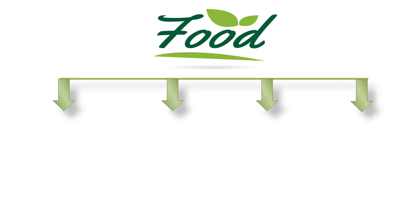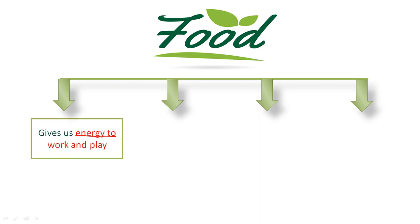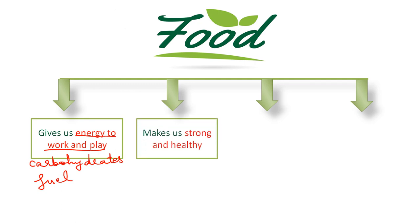Now I will explain the important point: why do we need food? Food gives us energy to work and play. This energy we get from carbohydrates. Carbohydrates are just like fuel which fulfill the body's most immediate energy needs. Good nutrition is one of the keys to make us healthy and strong. We can improve our health by taking a balanced diet, so we should eat food which contains vitamins and minerals.